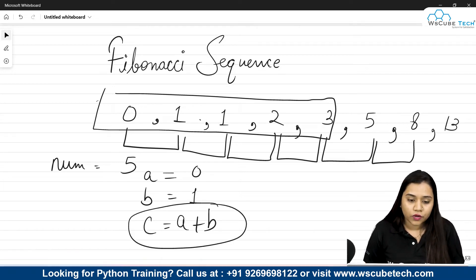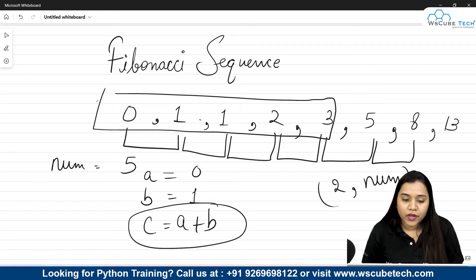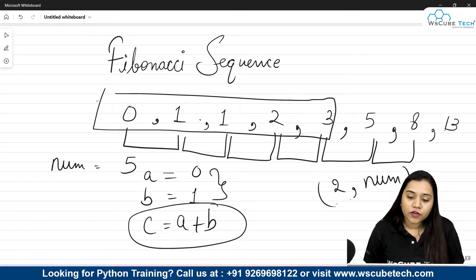How this range is going to work? We will be taking the range from 2 to up to that number, whatever our number is. Because two elements we have already taken, 0 and 1, that's why we don't need to write 1 or 0 over here. We will start from 2 and it will go up to that number and it will iterate. What it will do? It will add A plus B to C. Also what it will do? It will change A to B and B to C.